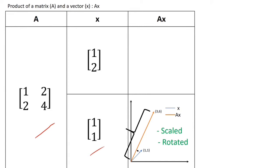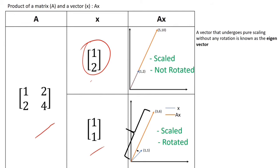x is taken as 1,2 here and do you see the difference? For instance, the resultant is scaled but not at all rotated. A vector that undergoes pure scaling without any rotation is known as the eigenvector corresponding to that matrix.